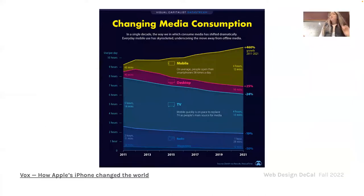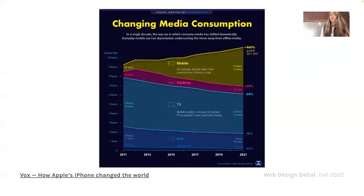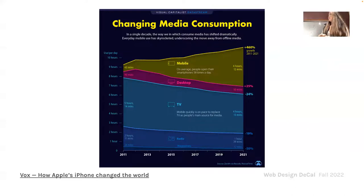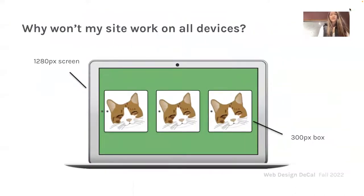Here's a graph illustrating the growing consumption of mobile media over the past decade. On average people open their smartphones 58 times a day, and mobile browsing activity increased by 406% from 2011 to 2021. Television is becoming obsolete and mobile devices are on the climb, reiterating the importance of responsive design.